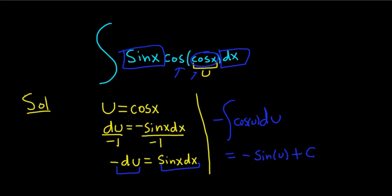Then you just replace u with what it actually is. u is cosine. So this is negative sine of the cosine of x plus our constant of integration, c.